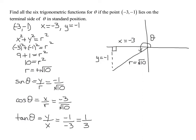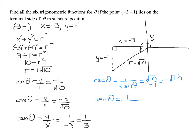Now we find the three reciprocal functions. The reciprocal of sine is cosecant of theta, which is 1 over sine of theta. Since sine was already a fraction, just flip it: the square root of 10 over negative 1, which equals negative the square root of 10. The secant of theta is 1 over cosine of theta — take the reciprocal to get the square root of 10 over negative 3. We never leave a negative in the denominator, so it's negative the square root of 10 over 3.